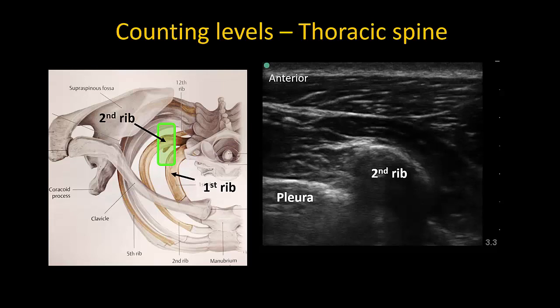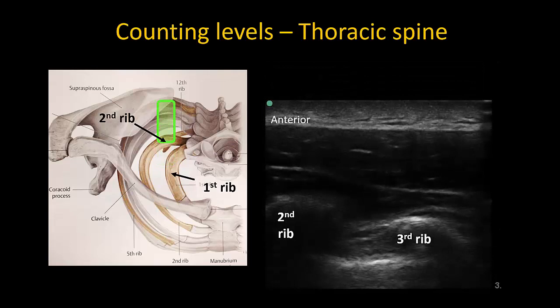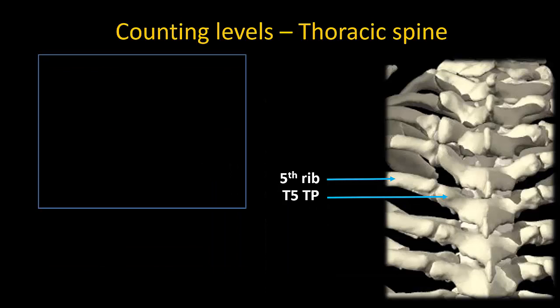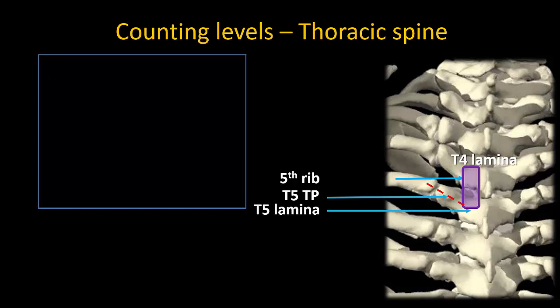From here on, it is just a question of counting from the second to the third to the fourth to the fifth rib and so on. When you have found the rib that corresponds to the interspace you are targeting, slide the probe medially to visualize the transverse process and then the lamina. It is important to note, however, that because of the cranial angle that the transverse process makes with the lamina, the lamina that is in line with the rib and tip of the transverse process is actually the upper one — the T4 lamina in this case — and the T5 lamina will be lower or more caudal. So in this case, following the fifth rib will lead you to the T4-T5 space. The T5-T6 space is the next lower one and not necessarily in view on the ultrasound image.